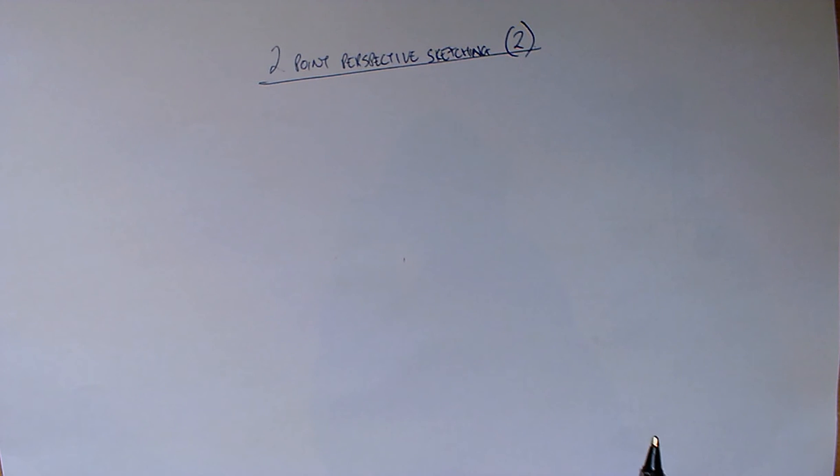This second two-point perspective sketching session looks at drawing objects above, on, and below the horizon line.